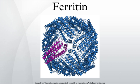Ferritin is a ubiquitous intracellular protein that stores iron and releases it in a controlled fashion. The protein is produced by almost all living organisms, including algae, bacteria, higher plants, and animals. In humans, it acts as a buffer against iron deficiency and iron overload. Ferritin is found in most tissues as a cytosolic protein, but small amounts are secreted into the serum where it functions as an iron carrier.